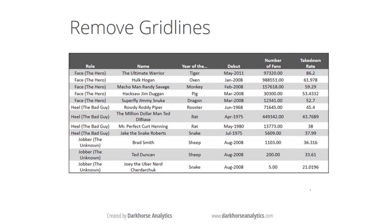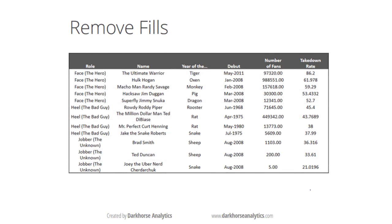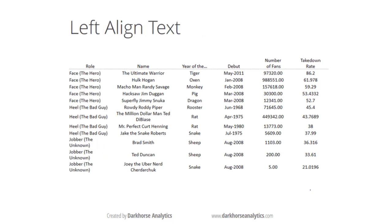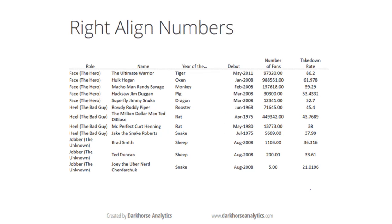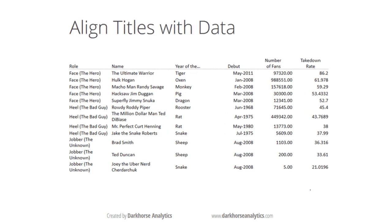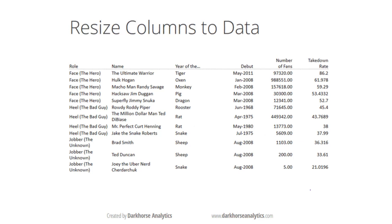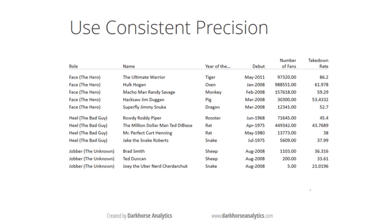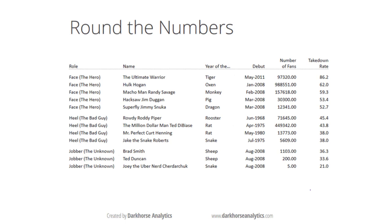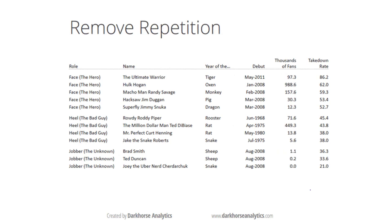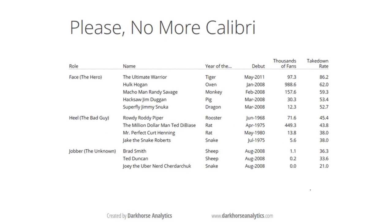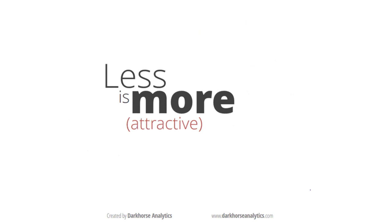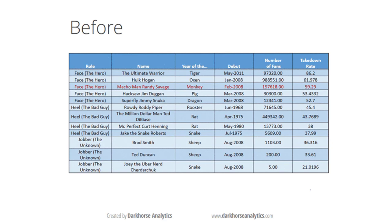We can remove those unnecessary colors and unnecessary elements like borders. We can also align the text so that it is clear to view, and also align the data. We can group the data to make it clear, and we want to make the numbers consistent. We can also remove duplicated items. I really like this one because it gives us a very important idea: less is more.